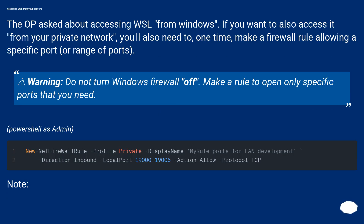Accessing WSL from your network: the original question was about accessing WSL from Windows, but if you want to also access it from your private network, you'll need to — one time — make a firewall rule allowing a specific port or range of ports. Warning: do not turn the Windows firewall off. Make a rule to open only the specific ports that you need.